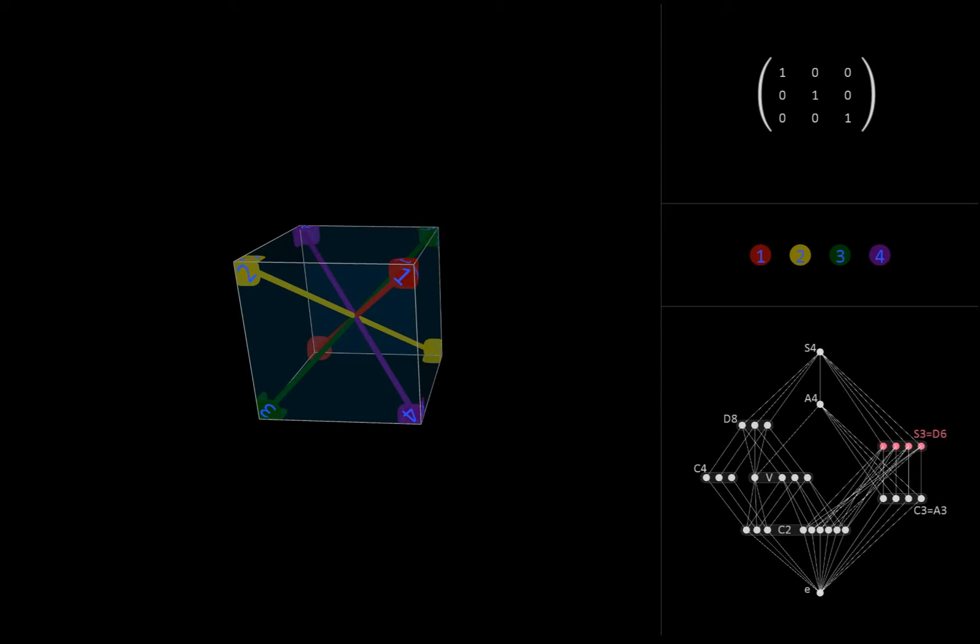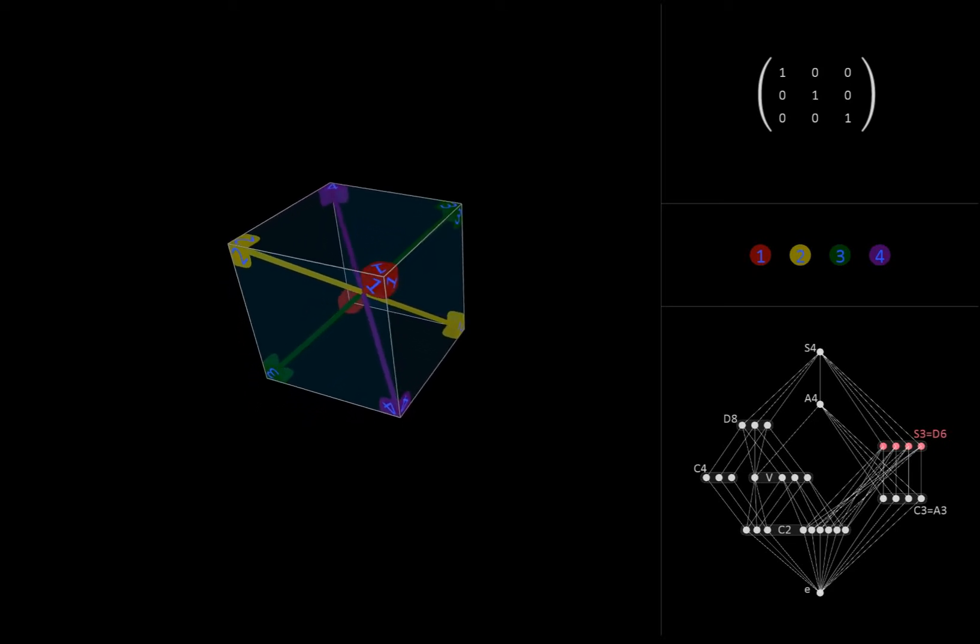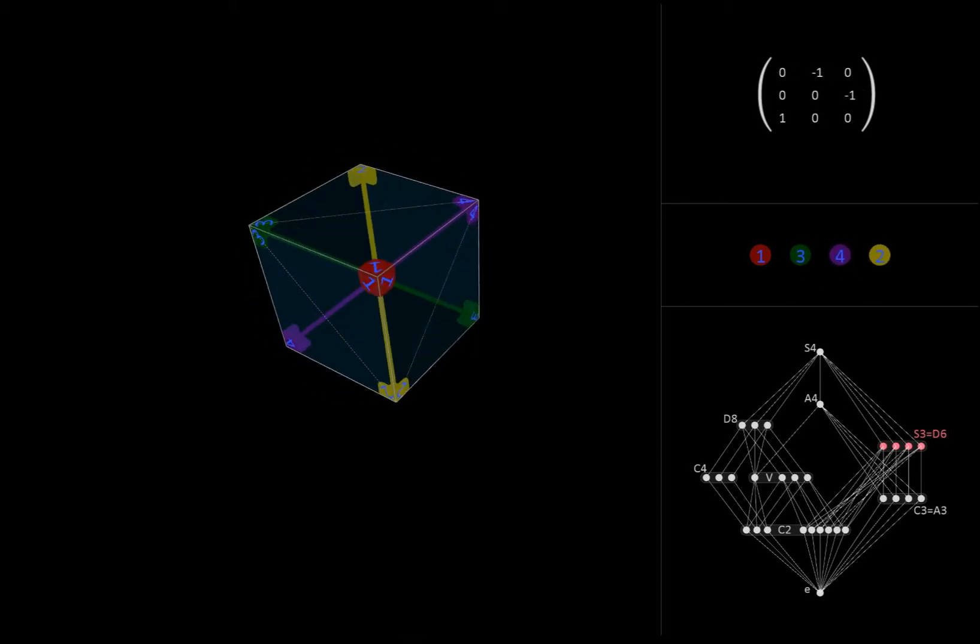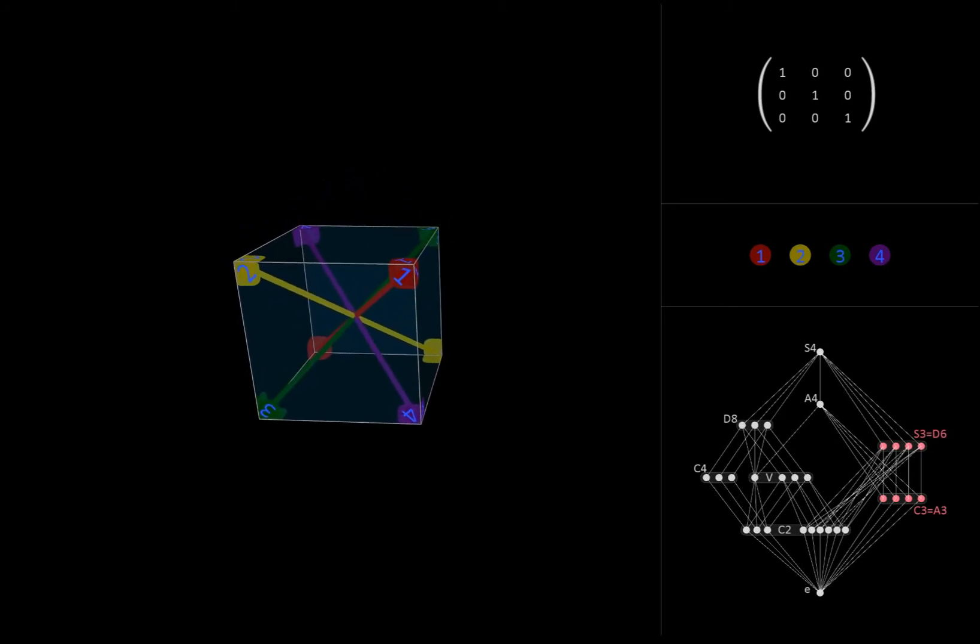Combinatorially, this group is the set of all permutations of three objects. In our particular case, these three objects were the diagonals numbered 2, 3, and 4, while the first diagonal remained fixed. Geometrically, we often think of this group as the group of symmetries of an equilateral triangle. And if we look at the cube from a certain perspective, we can really see this threefold structure. Here we have a 120 degree rotation about the red diagonal, which generates one of our C3 groups. Combining this with a 180 degree rotation that flips the red diagonal around, we can generate the entire D6 group.